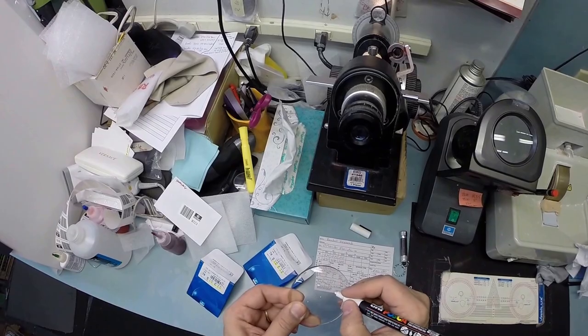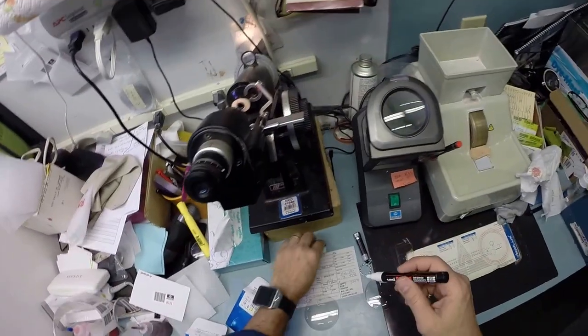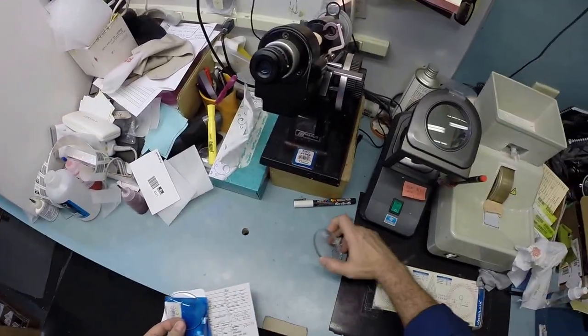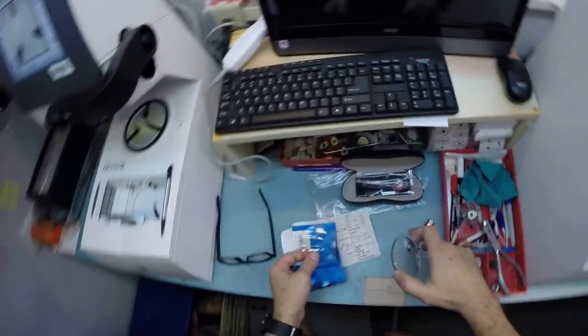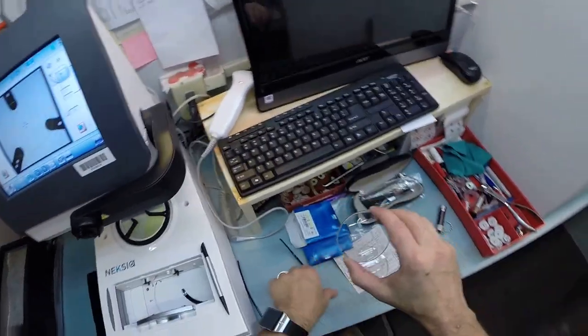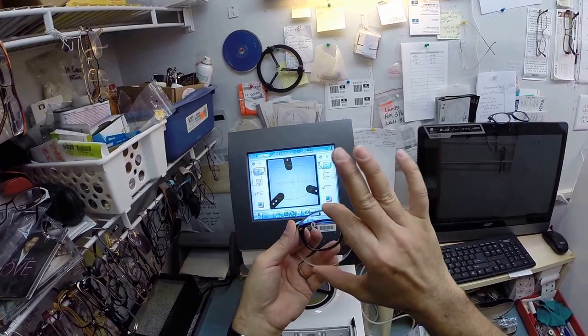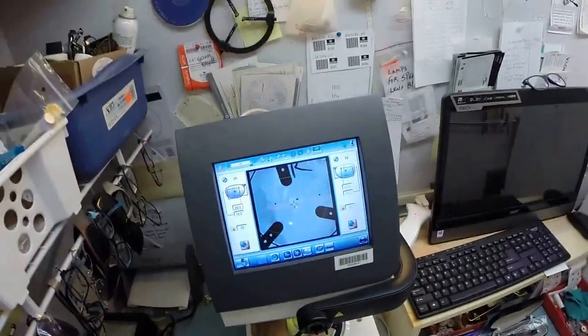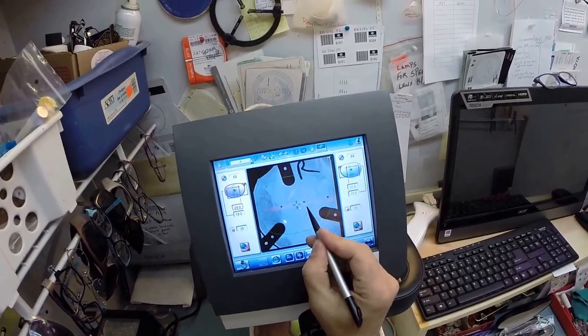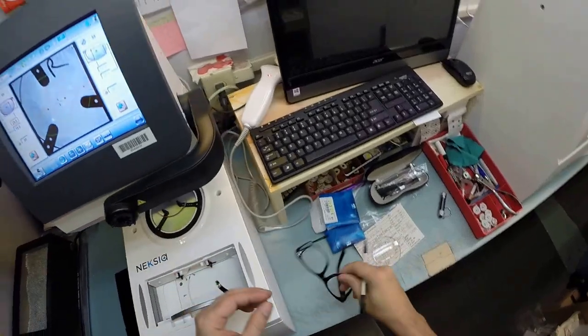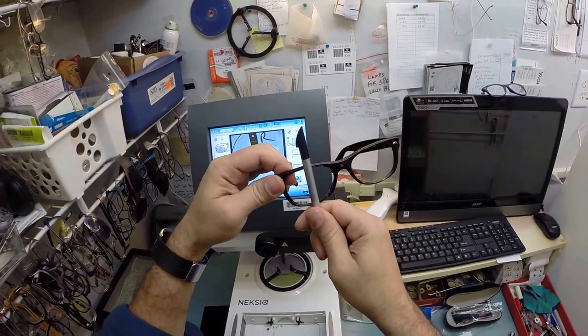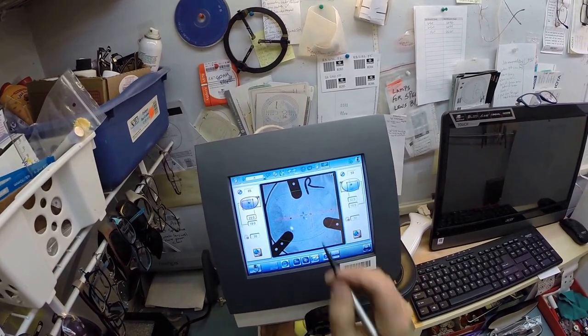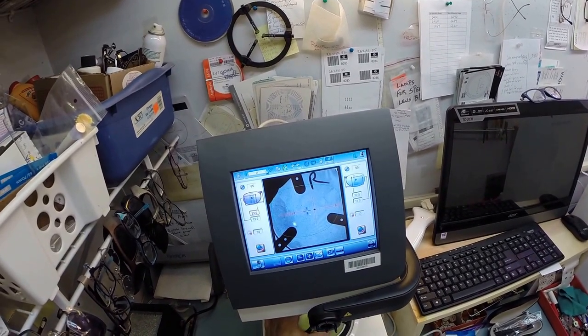The reason why I put those dots on there is it shows me exactly how your lenses have to be oriented in the frame. Those white dots show up black on my screen. That one in the center is your optical center. That blue cross is the geometric center of your frame. If I was to measure vertically and horizontally, this would come up like the crosshairs of a scope. I'm going to move that inset just a little bit to get everything lined up perfectly.